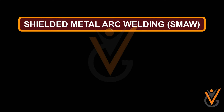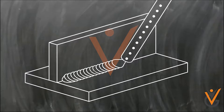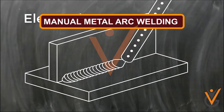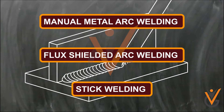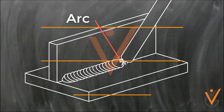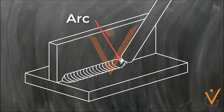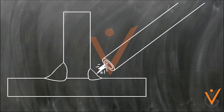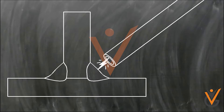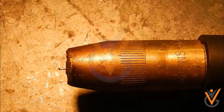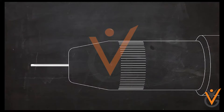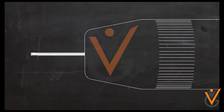Shielded Metal Arc Welding (SMAW), also known as manual metal arc welding, flux shielded arc welding, or stick welding, is a process where the arc is struck between the metal rod and the work piece. Both the rod and work piece surface melt to form a weld pool. Flux Core Arc Welding (FCAW) was created as an alternative to shielded metal arc welding.